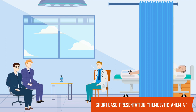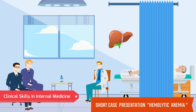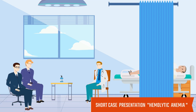Liver is palpable and the upper border of the liver is in the 5th intercostal space. The lower border is just below the right costal margin in the mid-clavicular line. Total span of liver is 17 cm. Surface is smooth, soft in consistency, and it is non-tender.